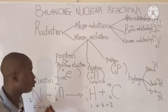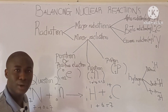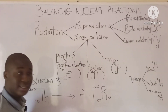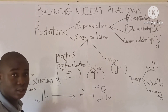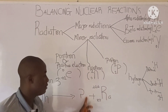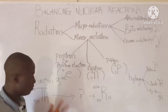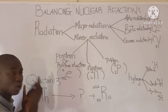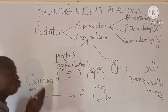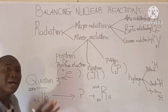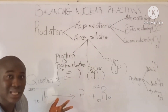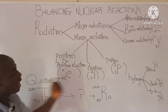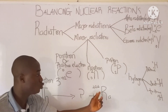That is how to solve questions under this aspect. Let's move to the third question. They said we should identify the missing atom or missing radiation. This is thorium-230, and thorium exists in various isotopic forms. This element is radium-226.